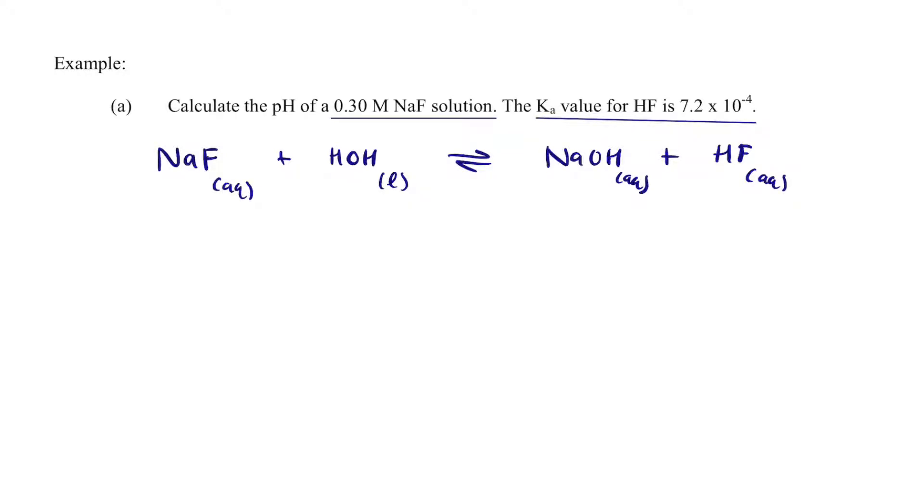and what I can do right now is I can see that this is going to be basic. So when it asks for the pH, I can predict that this should be basic. The reason I know is, one, we produce a weak acid, and we produce a strong base,